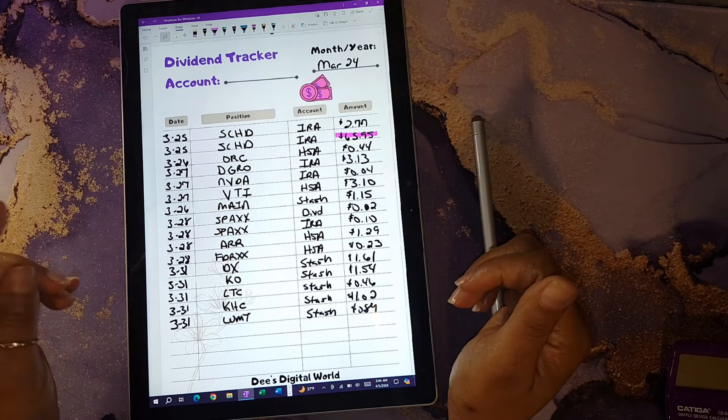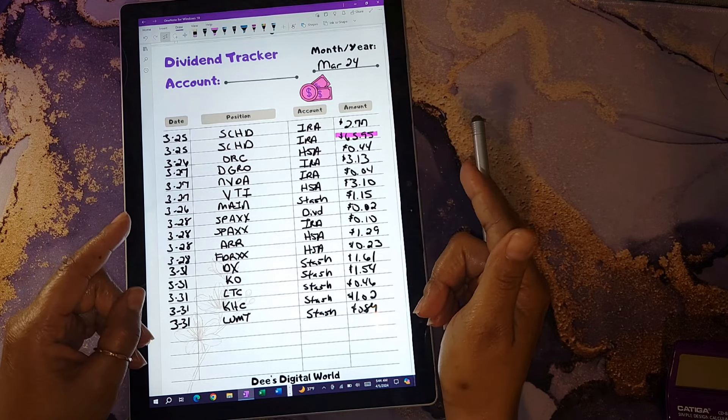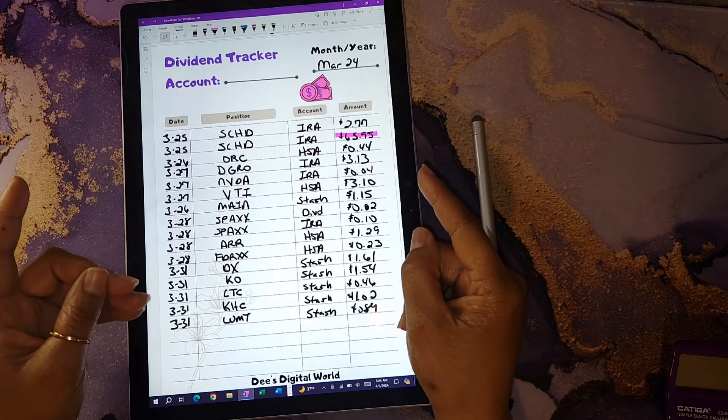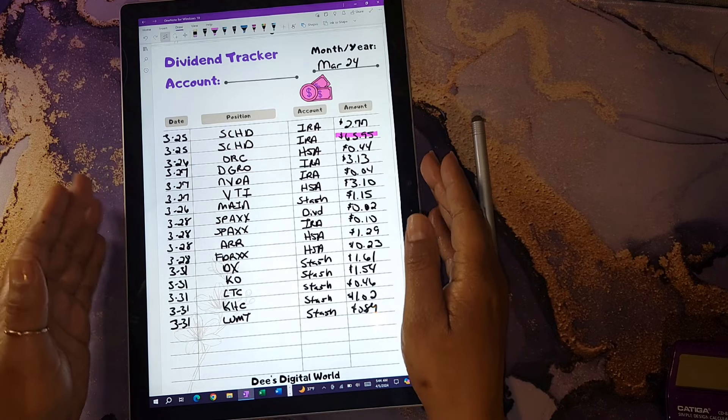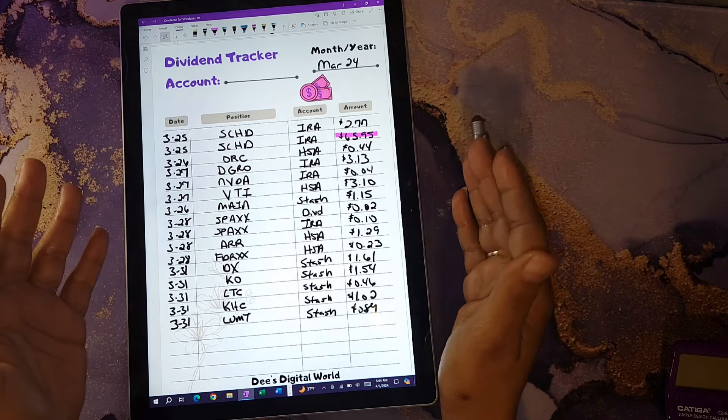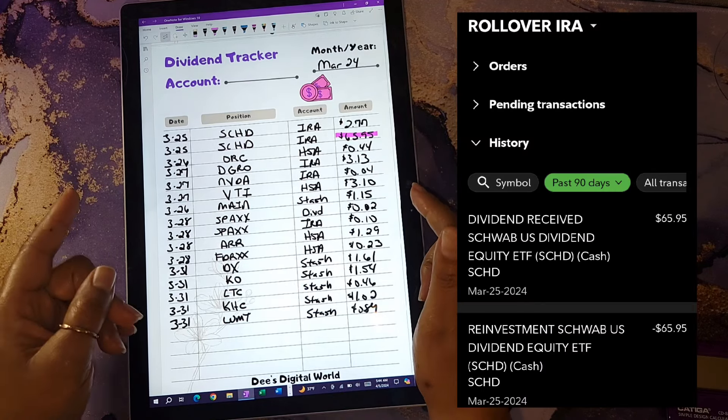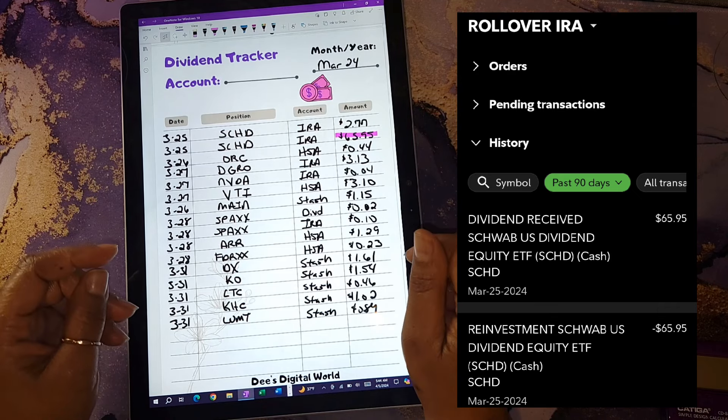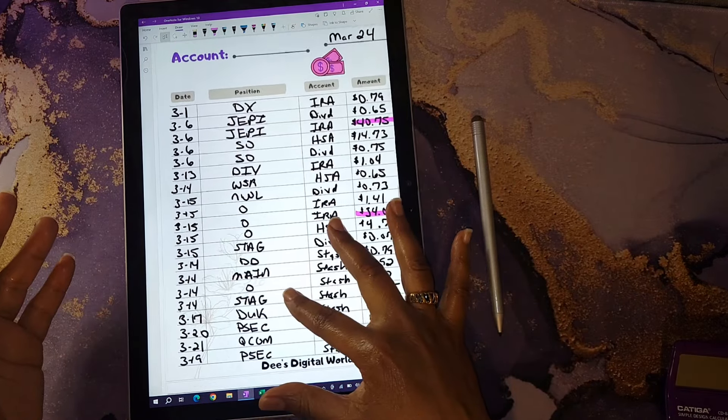My next highest dividend for the month was from SCHD, and this position actually pays out quarterly. The other two that I just noted pay out monthly. Some companies or positions pay out monthly, quarterly, and some even pay out yearly, depending on the structure of that position. So I got a total of $65.95 from SCHD. I will insert a screenshot of that particular dividend that I did get. These were the dividends that I received for March.